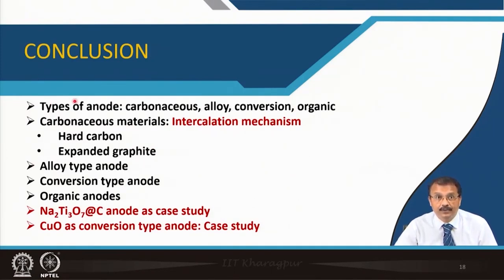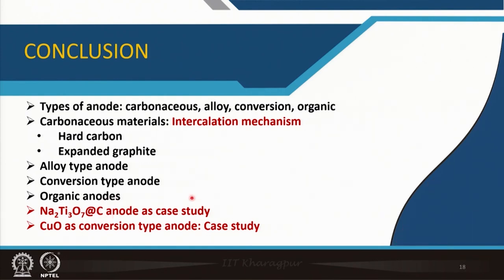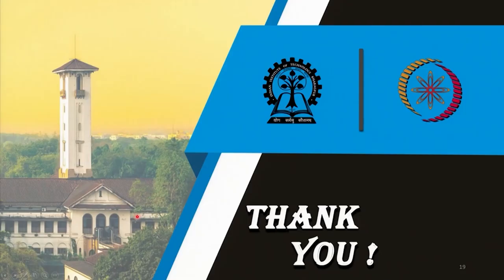In summary, we have talked about types of anodes: carbonaceous material, alloy, conversion type, and organic. Carbonaceous materials are intercalation type — we considered hard carbon and expanded graphite. Alloy-type anodes are more or less similar to lithium ion battery anodes. Conversion-type and organic anodes were also discussed, with Na2Ti3O7 and copper oxide presented as case studies from our own recent research, to help you correlate the lecture knowledge with experimental laboratory results. Thank you for your attention.